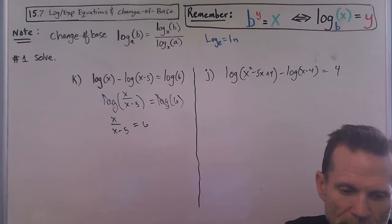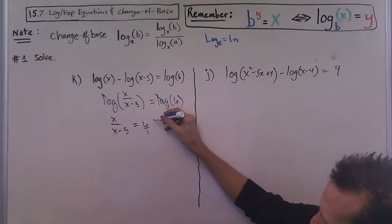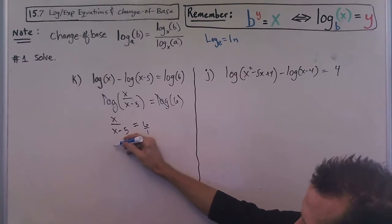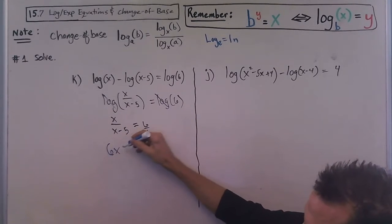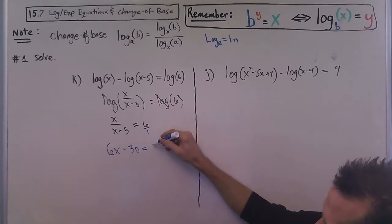We can think about that as 6 over 1 and do some cross-multiplying. Cross-multiplying gives me 6x minus 30 from here and then x.